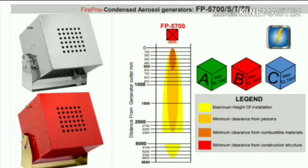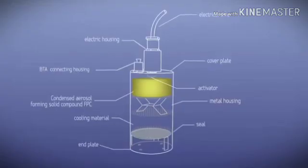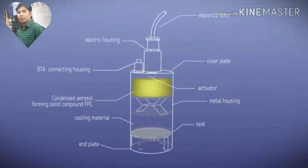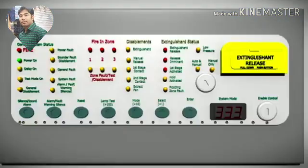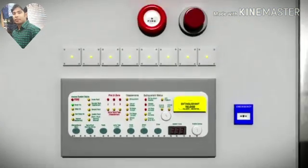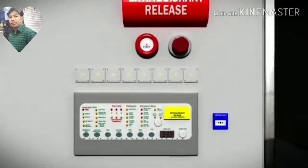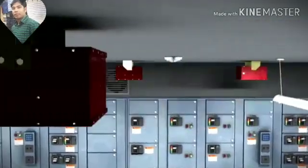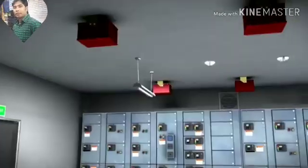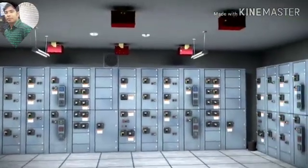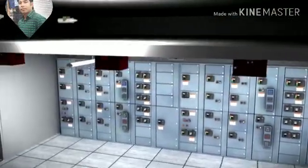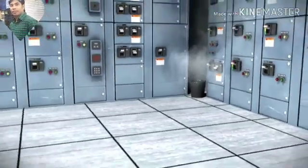There are three levels of fire protection: the first is internal fire protection, the second is streaming fire protection, and the third is total flooding fire protection. The aerosol forming compounds consist mainly of naturally occurring potassium salts. Upon activation, the compound transforms rapidly into a highly effective condensed aerosol that extinguishes fire by interrupting chemical chain reactions on a molecular level, without depleting oxygen.